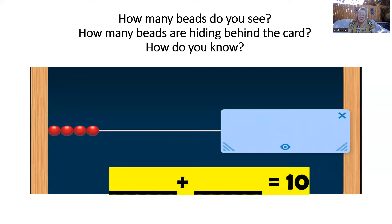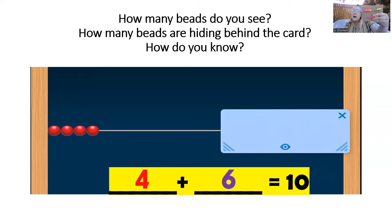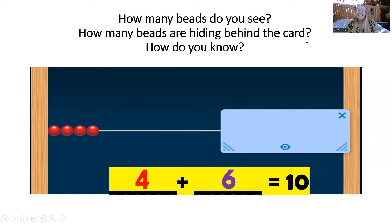How many beads do you see now? Make that on your number rack. Yeah, you have it — four beads. So if there are four beads, how many beads are hiding behind the card? You're so good. Yes, six beads hiding behind the card. Let's read that equation: four plus six equals 10. Good job.